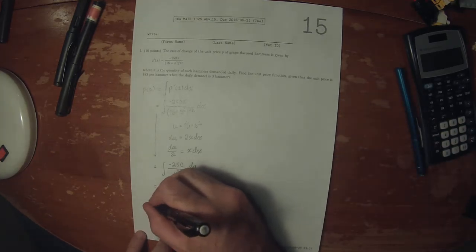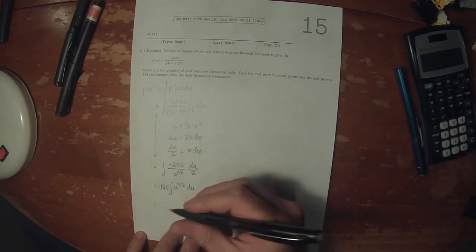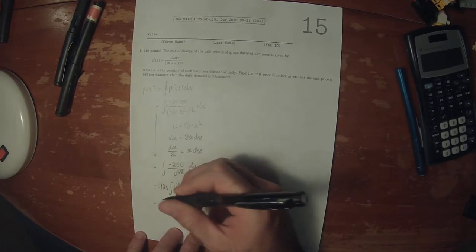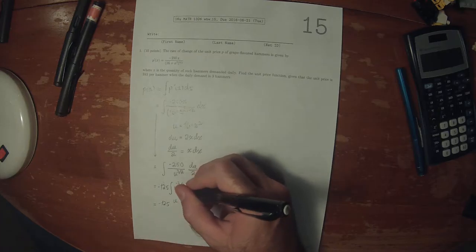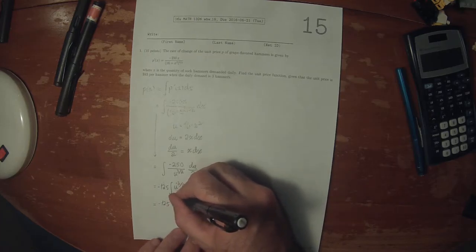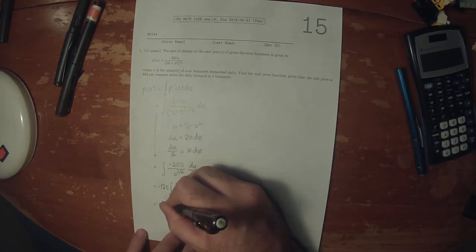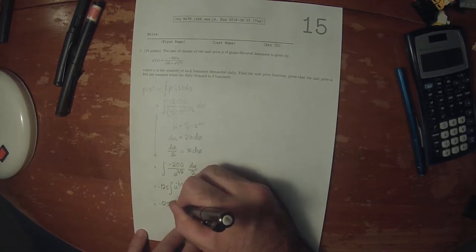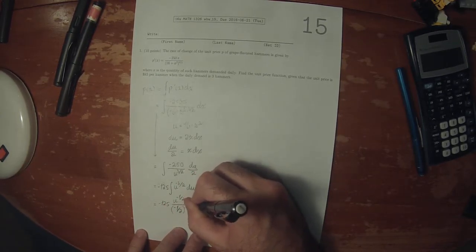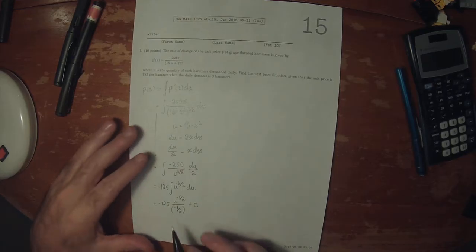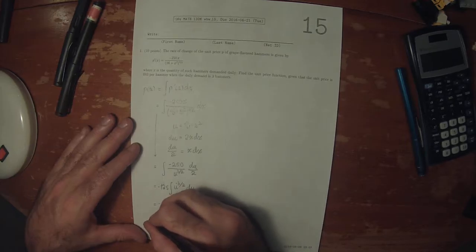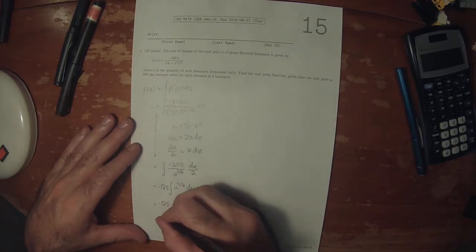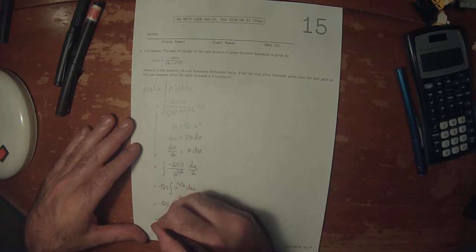Now we can use the power rule. So negative 125, u to negative three halves plus one is negative one half, and then divide by negative one half plus a constant. So these negatives cancel. Division by half is same as multiplication by two, so that would be 250.